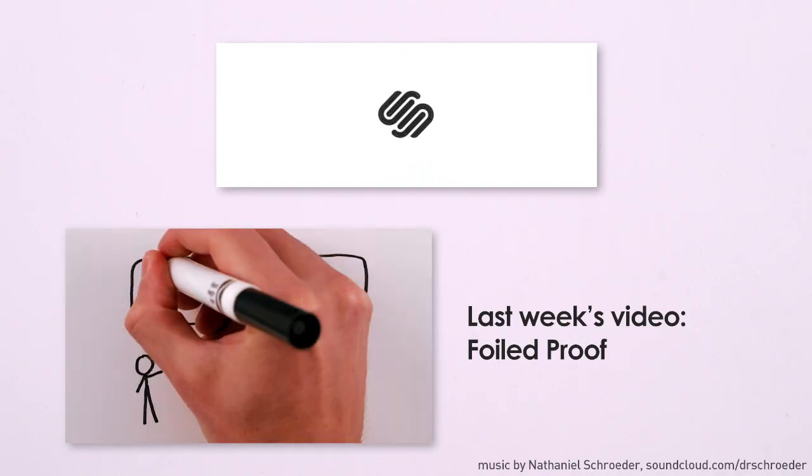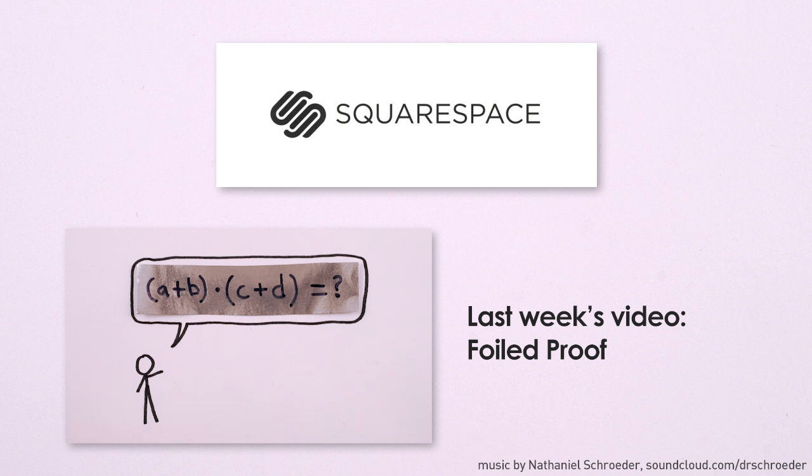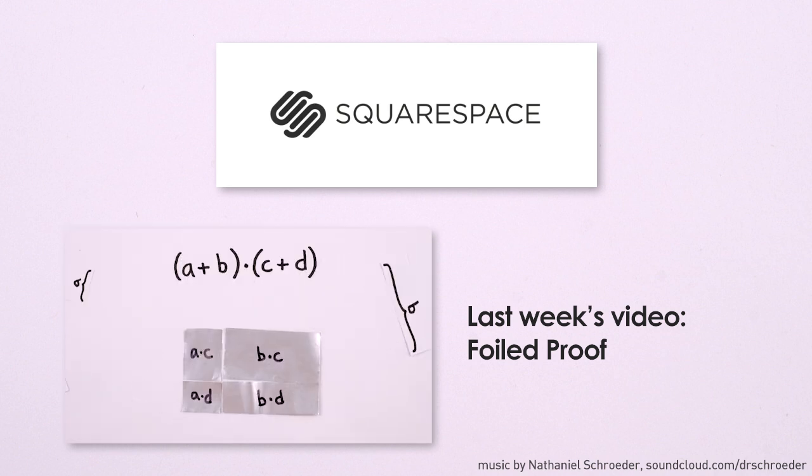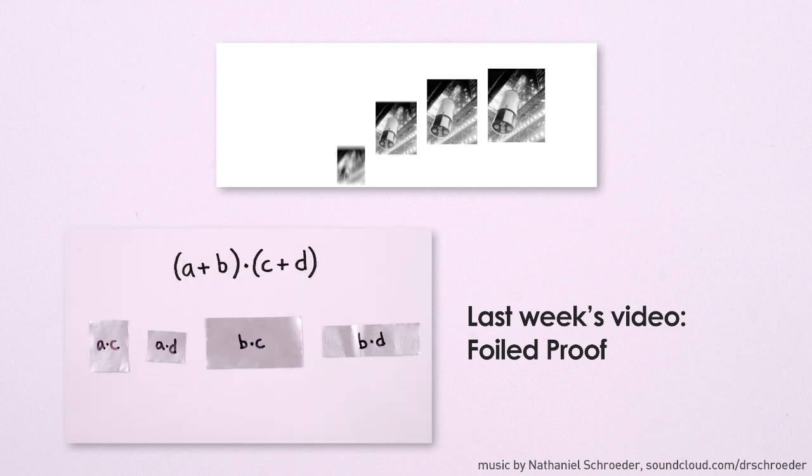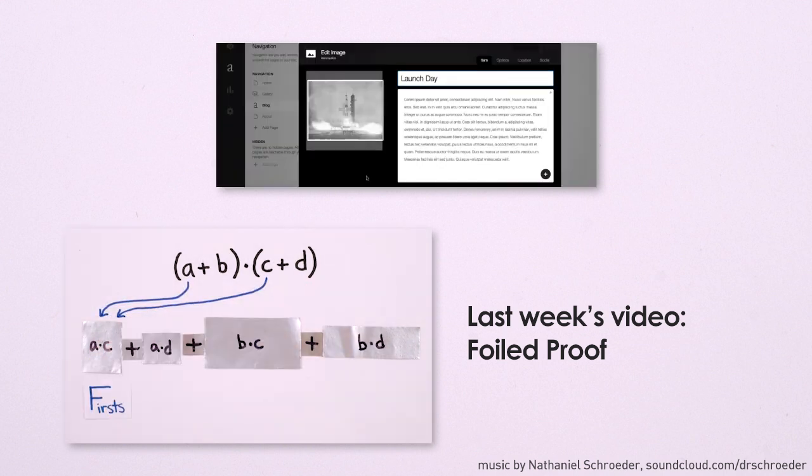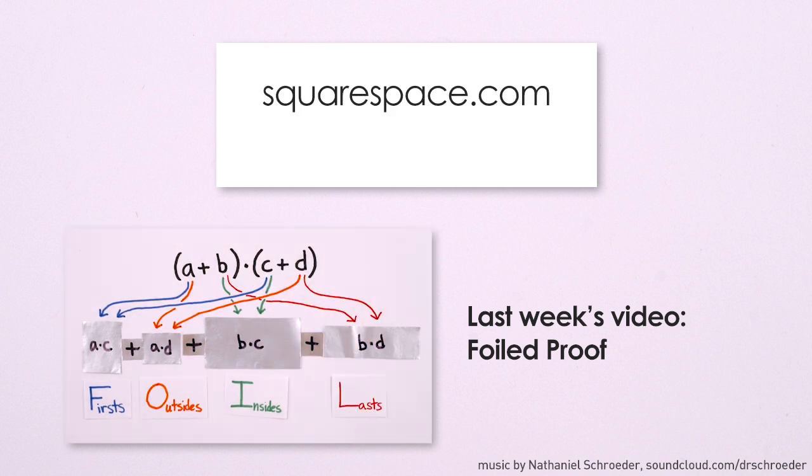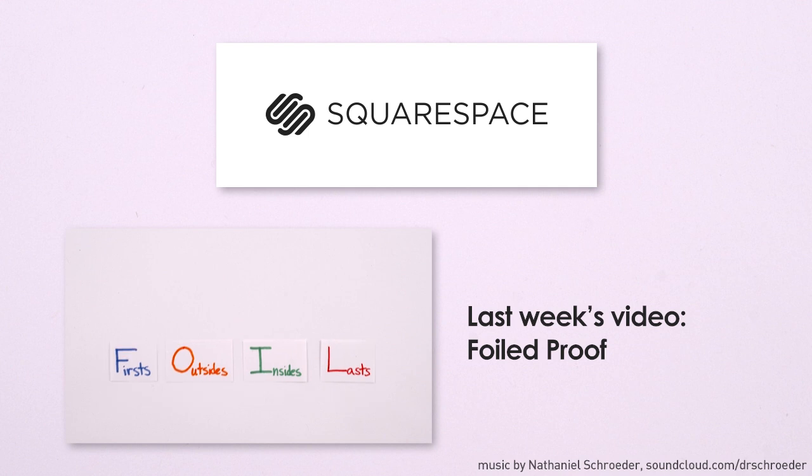This MinutePhysics video was brought to you by Squarespace, the all-in-one platform that makes it fast and easy to create a professional website, blog, portfolio, or online store. Basically, they let robots do the robot work of building and managing your website, and leave the exciting and creative parts to you. For a free trial and 10% off your first purchase on new accounts, go to squarespace.com and use offer code MINUTEPHYSICS5. Again, thanks to Squarespace for supporting this episode of MinutePhysics.